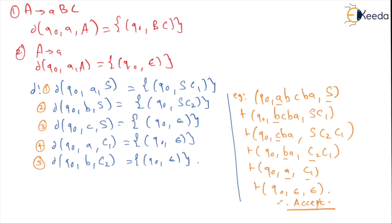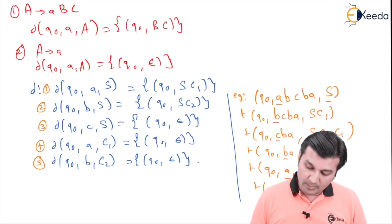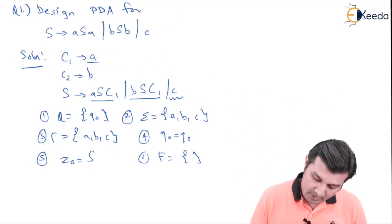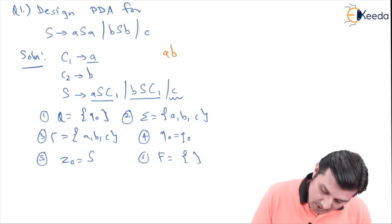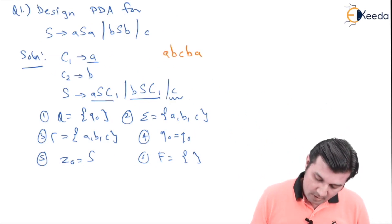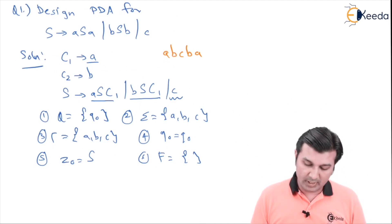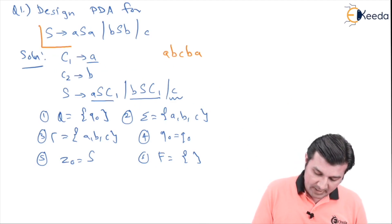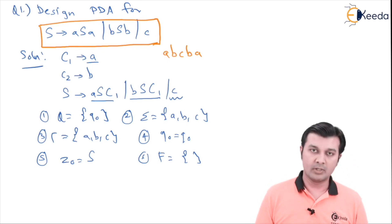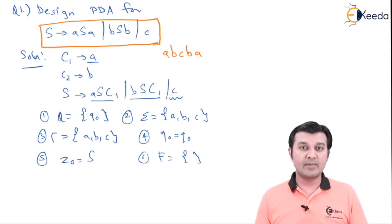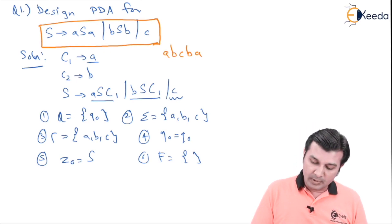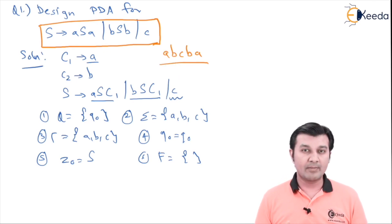Right, if you verify this particular input a b c b a, it's a problem a b c b a, we can see that this particular input will also be accepted by this context free grammar. You can work on with LMD and RMD as we tried in the previous video and see that this particular string is very well accepted by my context free grammar as well as the equivalently designed pushdown automata.